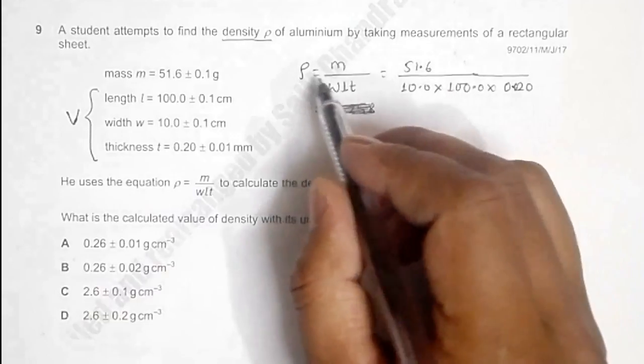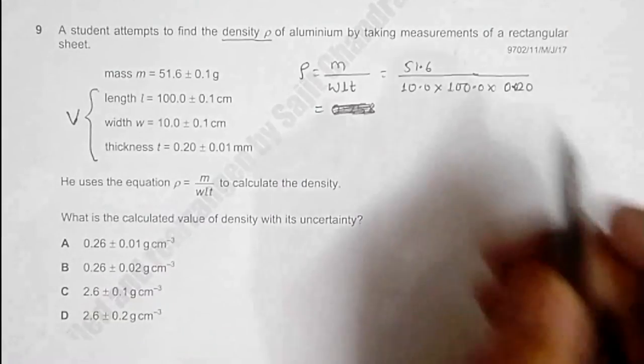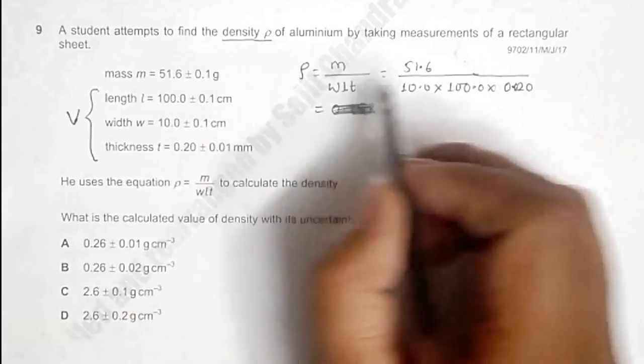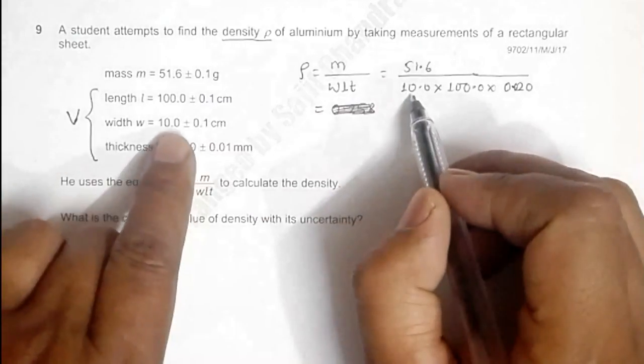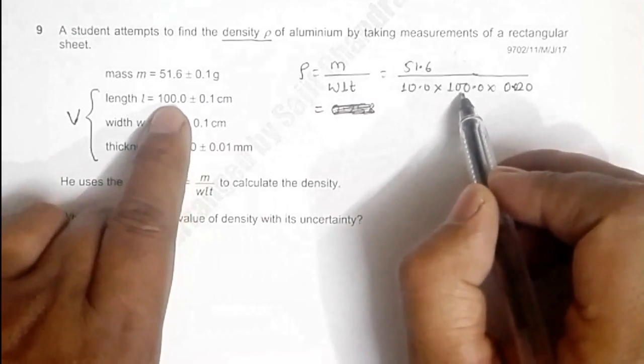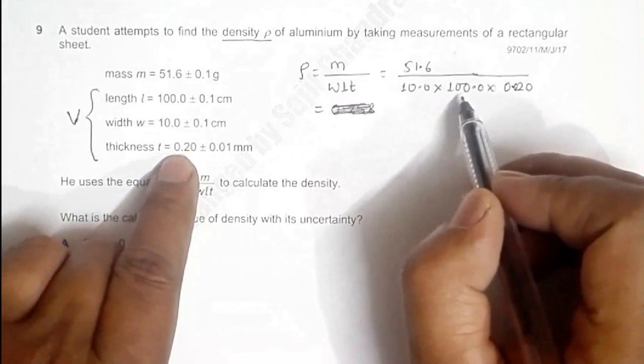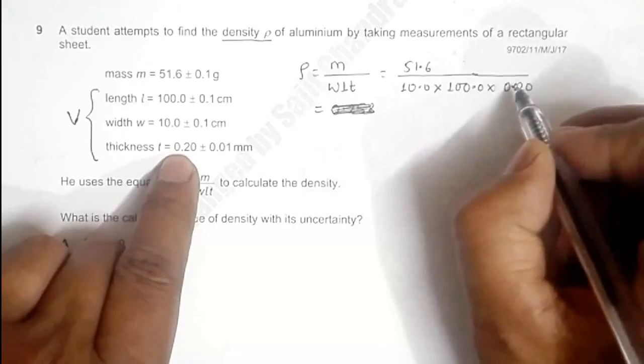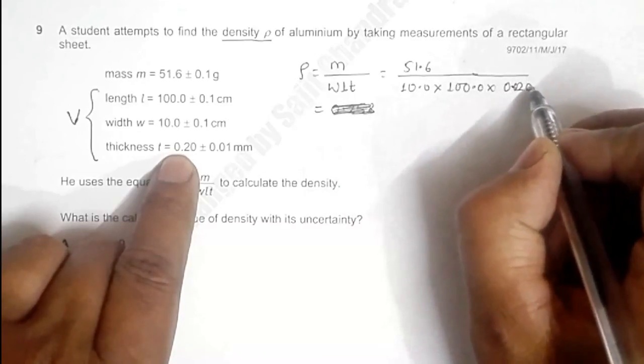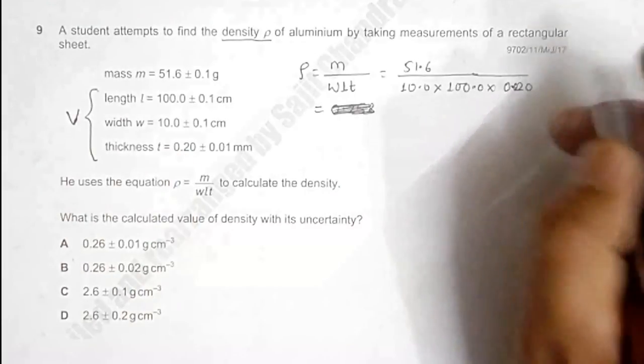ρ = M/(WLT) = 51.6 g / (10.0 cm × 100.0 cm × thickness). The thickness is in millimeters, so I have to convert 0.20 mm to centimeters, which will be 0.020 cm.